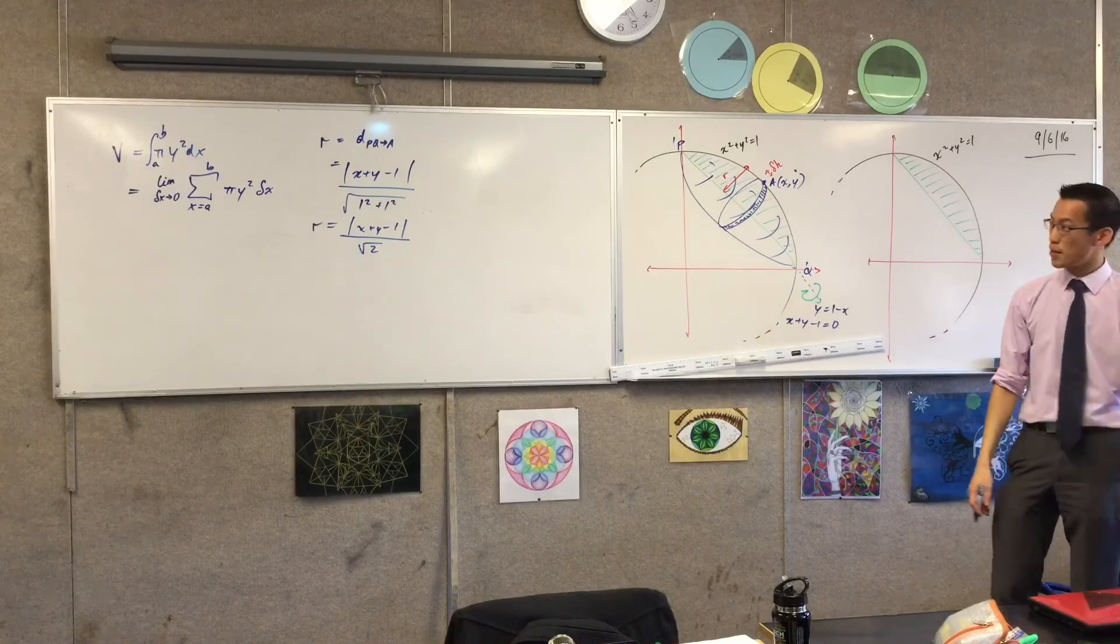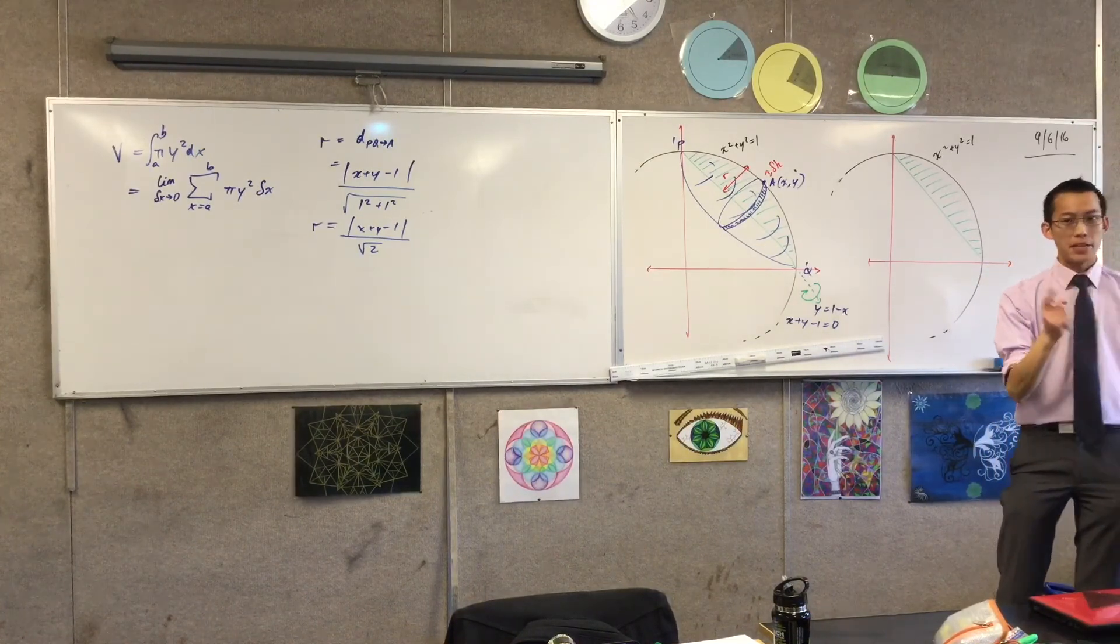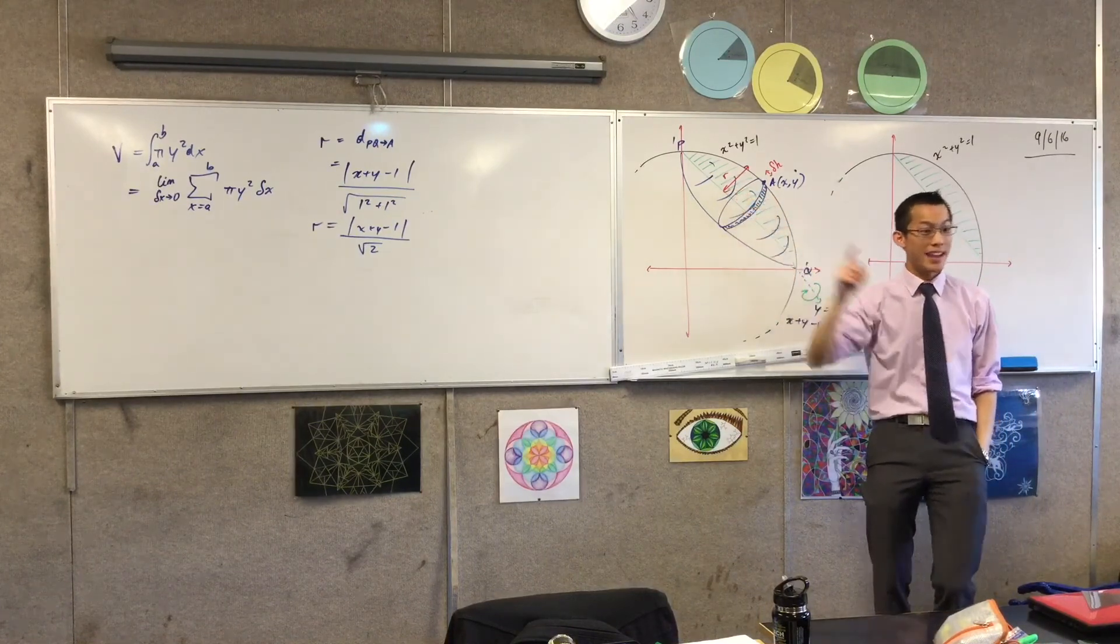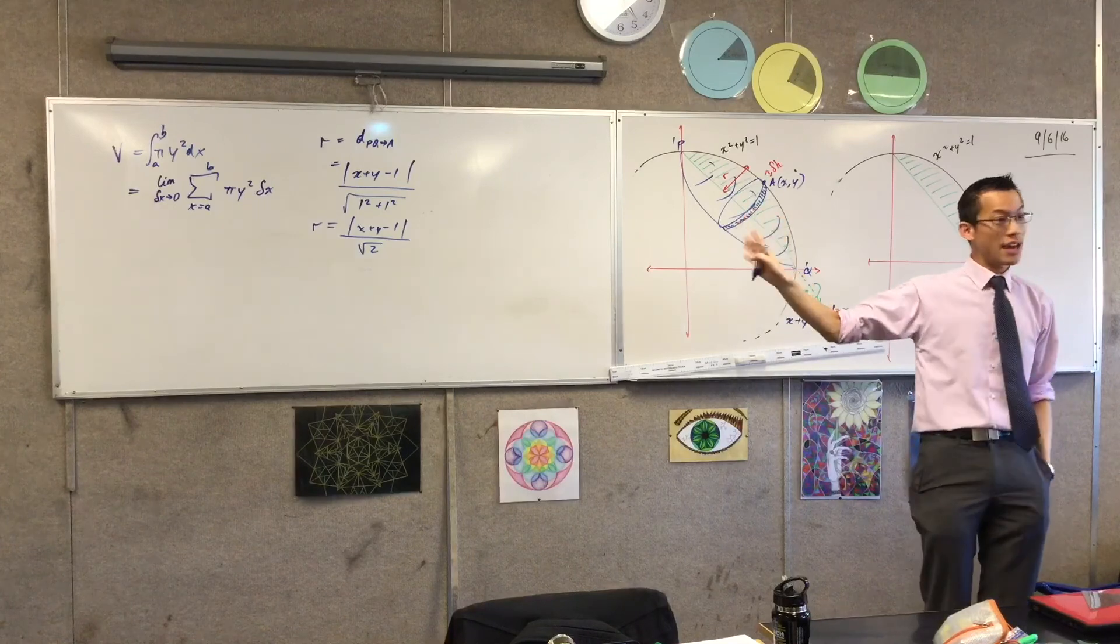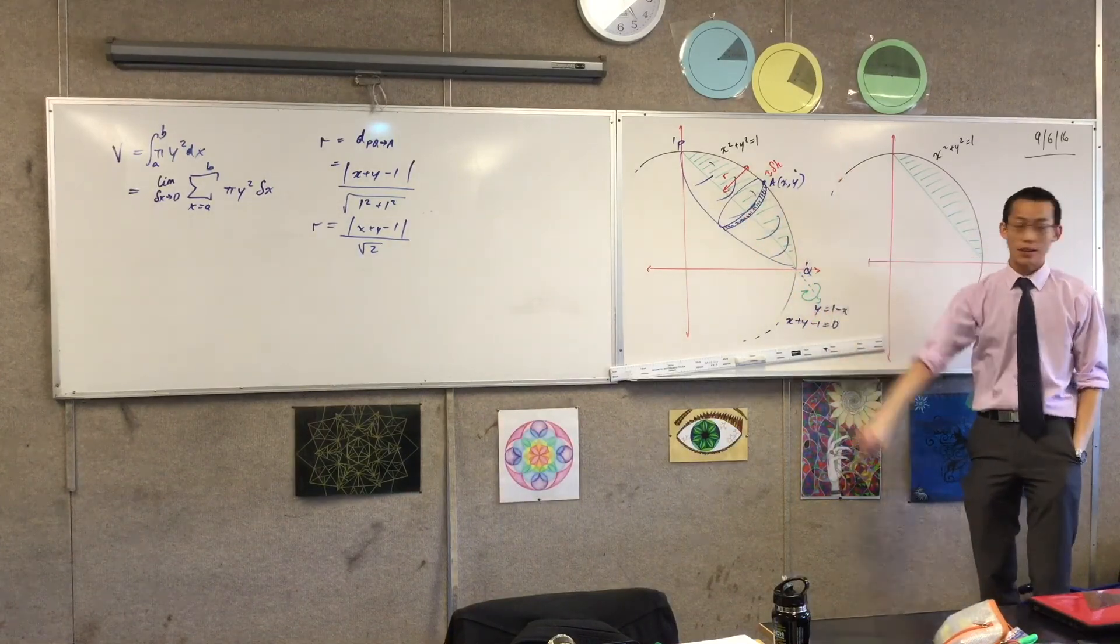It does look a bit icky at the moment, especially with that square root on the bottom and that absolute value. But don't forget, what am I going to do with this radius when I start to work out the volume? Answer, I'm going to square it. So I'm just going to leave that there for now. I'll come back to it. Now let's deal with this delta h.